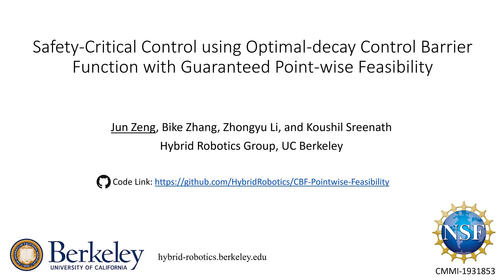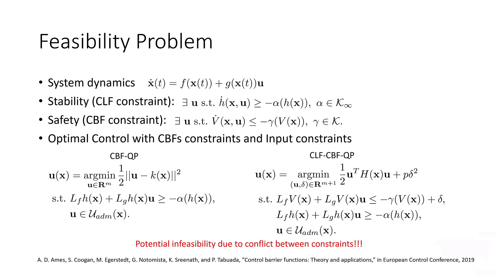Hello, I'm Jun, and I'm going to present our recent work on how to handle the feasibility problem in optimal control using control barrier functions. Here is a recap: assuming system dynamics with two class K functions alpha and gamma for decay rates of control Lyapunov functions (CLF) and control barrier functions (CBF), we have two safety-critical optimal control problems: CBF-QP and CLF-CBF-QP. For CBF-QP, we find minimum deviation from a nominal controller Kx while guaranteeing safety. For CLF-CBF-QP, we additionally have a CLF constraint, already relaxed with variable delta to prevent infeasibility from conflicts.